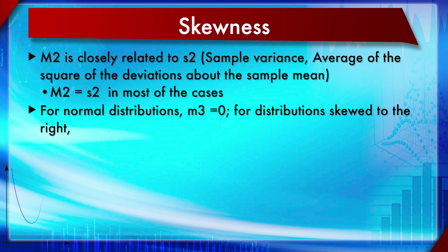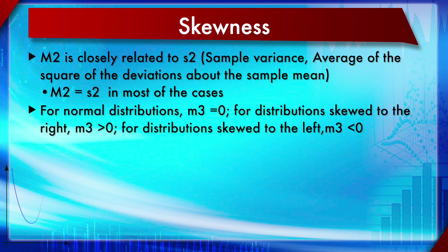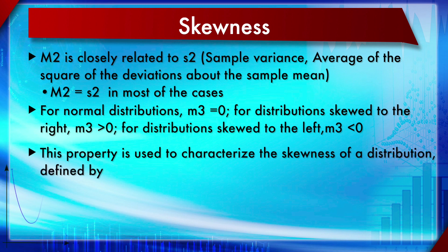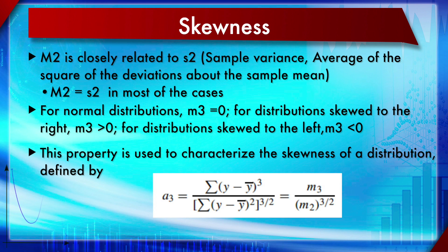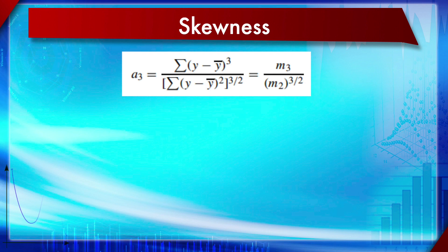Skewness is the measure of whether a distribution is left-skewed or right-skewed. It is a shape parameter describing where the tail is — whether it extends to the right or to the left. Skewness is calculated as m3 divided by m2 to the power 3/2. In Microsoft Excel, the formula is =SKEW(), which returns the skewness value.